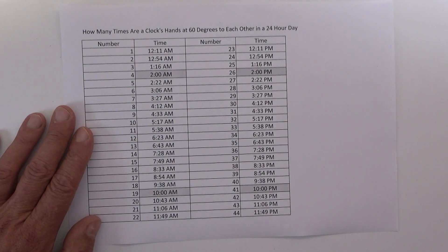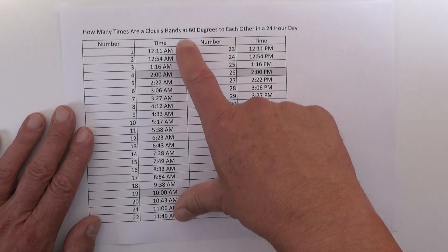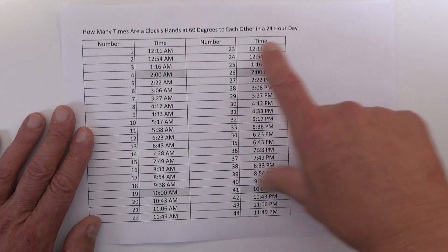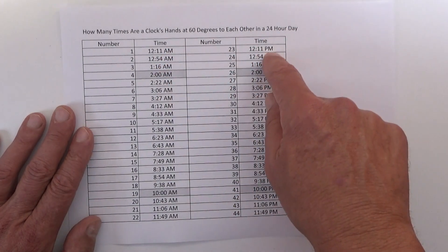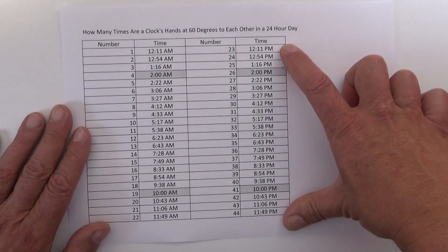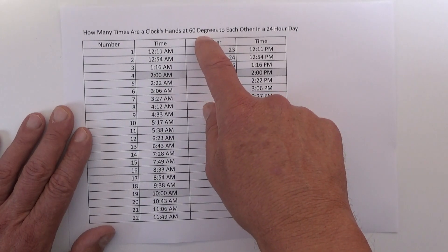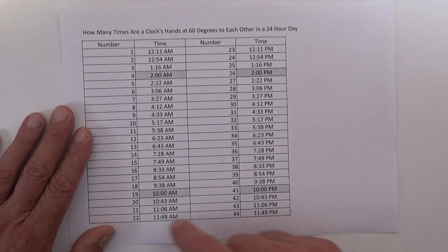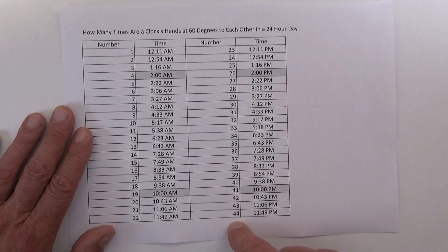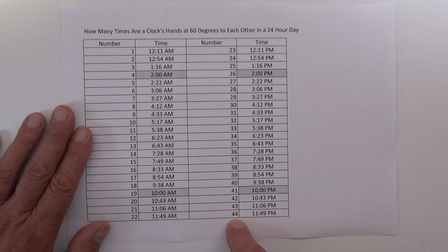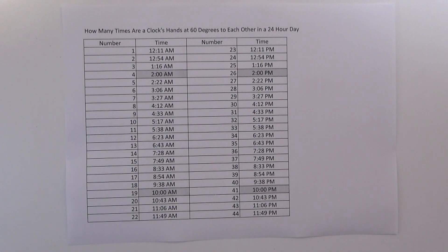These are the 22 times in the morning, and they're exactly the same times in the afternoon except rather than having AM they have PM. That's all the times that a clock's hands are at 60 degrees to each other in a 24-hour day. There's 22 in the morning and another 22 in the afternoon and evening to give you a total of 44 times in a 24-hour day. Well, I hope you've enjoyed this video. Thanks for watching and goodbye for now.